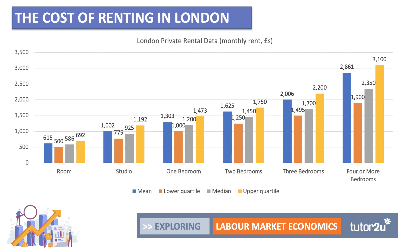One last piece of evidence is the cost of renting or buying a home. This chart shows the cost of renting in London, and for most property types — from a basic room through to three or four bedrooms — costs have risen substantially. The median for two bedrooms is now £1,450 per month. You can argue that high rates of migration drive up demand for housing, increasing renting costs, which has consequences for people's spending power and for jobs and unemployment.